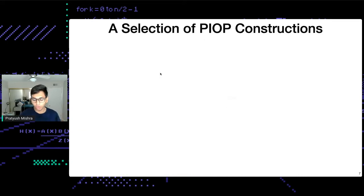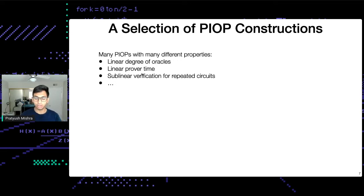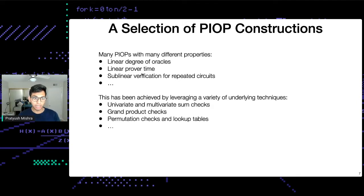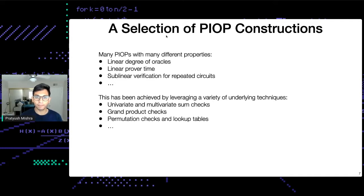There's been a lot of work over the past three to four years on constructing PIOP constructions with different kinds of prover efficiency, verifier efficiency, and support for different kinds of computations. They use a variety of interesting underlying techniques such as univariate and multivariate sum checks, product checks, permutation checks, and lookup tables — a huge world of interesting techniques that underlie efficient PIOP constructions.